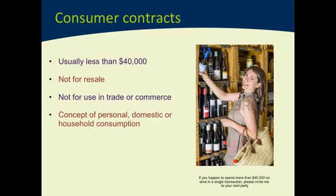Once we've considered the price threshold, we then have to look at what the goods are going to be used for. If the goods are being purchased for resale, we don't have a consumer contract—and that's regardless of price. So you might purchase goods worth $5 or $6, but if you purchase them with the intention of selling them on your eBay store which has its own Australian business number, we're not talking about a consumer contract. If you're purchasing something in order to resell it, it's not a consumer contract.